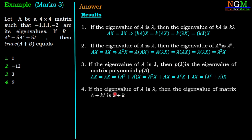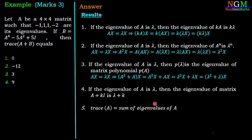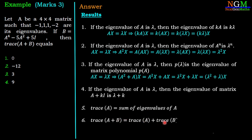Fourth result: if the eigenvalue of A is λ, then the eigenvalue of A + KI is λ + K. Result five: trace of A equals the sum of eigenvalues of A. And the sixth result: trace of A + B equals trace of A plus trace of B.